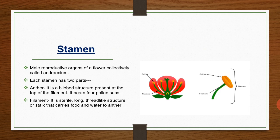The male reproductive organs of a flower are collectively called the androecium — that is, the androecium is the collection of stamens. Each stamen has two parts: anther and filament. The anther is a bilobed structure present at the top of the filament and bears four pollen sacs, in which pollen grains are produced. The filament is a sterile, long, thread-like structure or stalk that carries food and water to the anther.